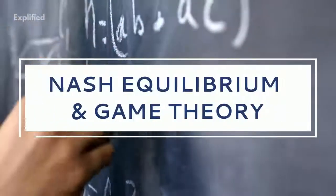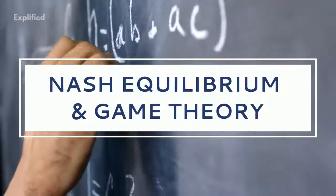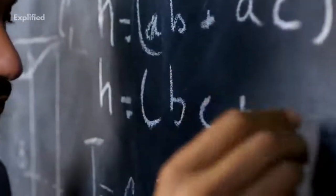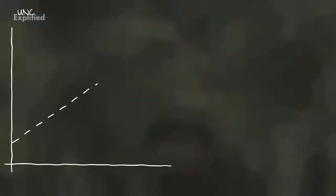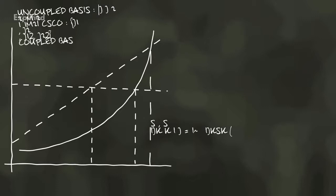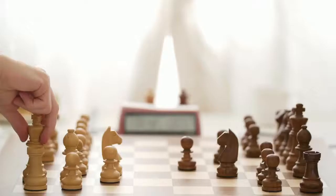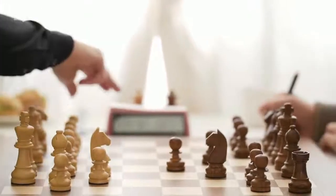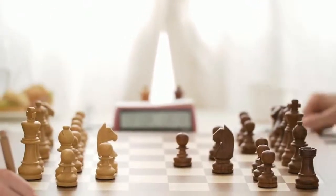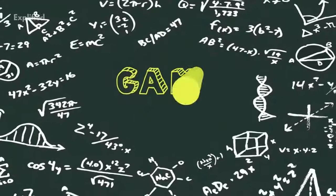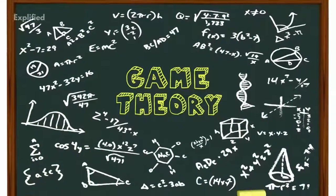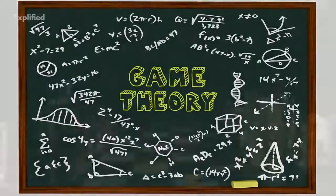Game theory is a branch of mathematical economics first theorized by John von Neumann in the 1930s. It is a mathematical framework for conceiving social situations among competing players. It is the science of strategy and serves as a model of an interactive situation among rational players. The key to game theory is that one player's payoff is contingent on the strategy implemented by the other player.